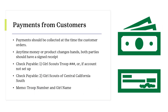Payments should be collected at the time the customer orders. This includes the order card orders. Credit cards can be accepted by having the customer order at the M2 site and clicking Girl Deliver. Cash and checks can also be accepted for payment. Cash and checks collected during order card sales should be returned to the troop product coordinator within 14 days of receipt from customer. Cash and checks collected during Girl Deliver for product should also be returned within that 14-day window.